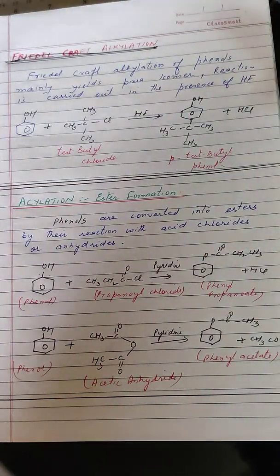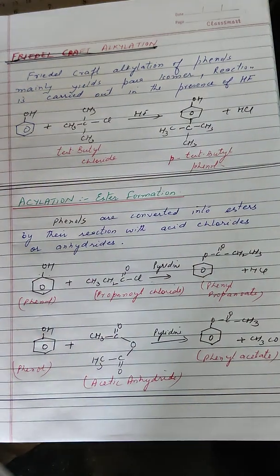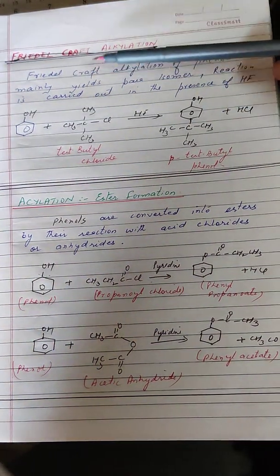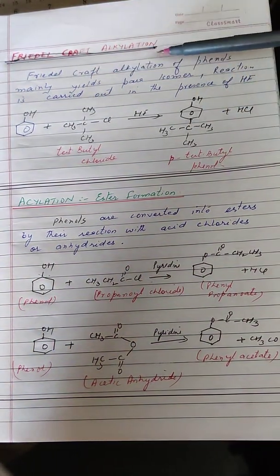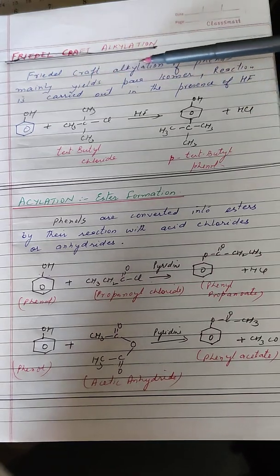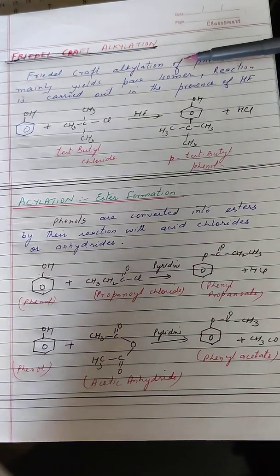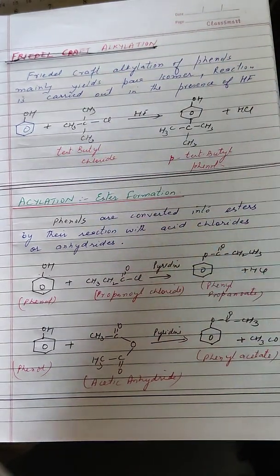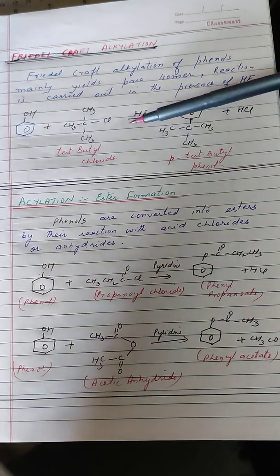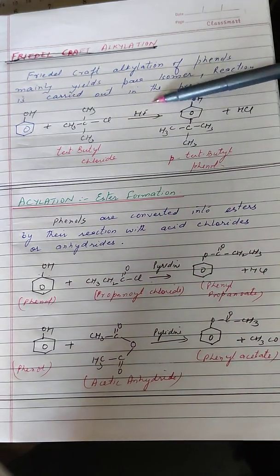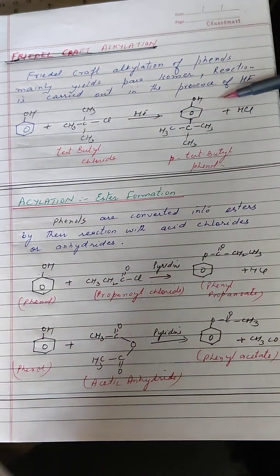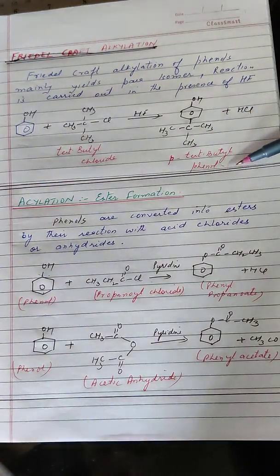After sulfonation, let us take up Friedel-Crafts alkylation. Friedel-Crafts alkylation of phenols mainly yields the para isomer. For example, phenol when treated with tert-butyl chloride in the presence of HF results in the formation of para-tert-butylphenol.